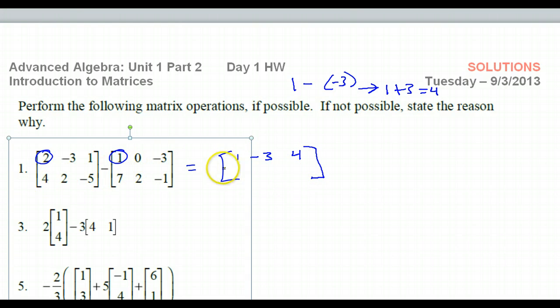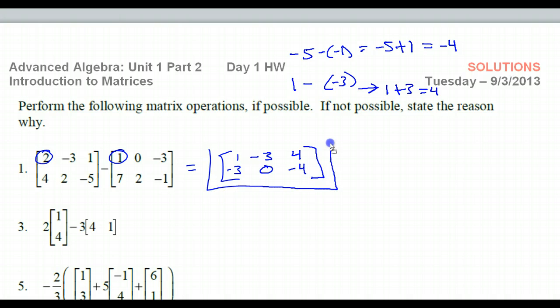4 minus 7, negative 3. That's going to be 2 minus 2 is 0. And negative 5, here we go again, minus negative 1. That's the same as negative 5 plus 1, which is negative 4. So this would be the answer for number 1.